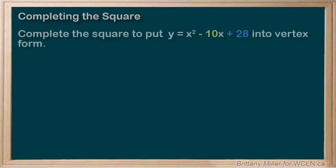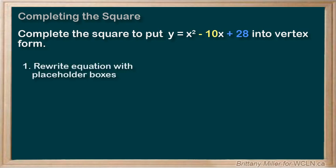Let's do another example with less lecturing and just the steps. Complete the square to put x squared minus 10x plus 28 into vertex form. Step 1. I like to write the equation with some empty boxes to leave room for what I'm going to add and then take away.